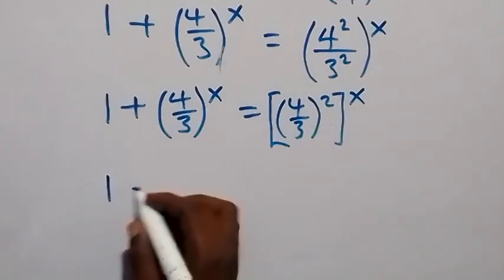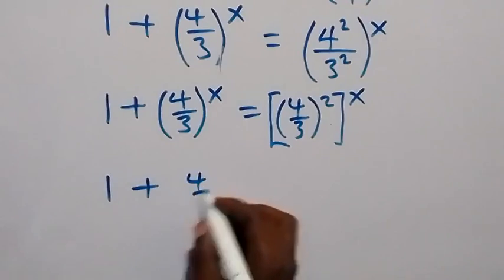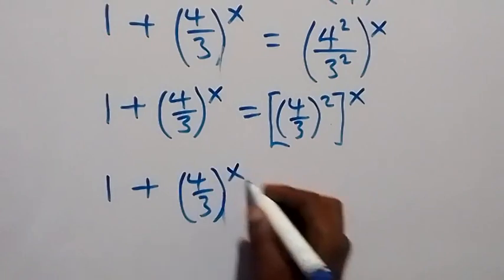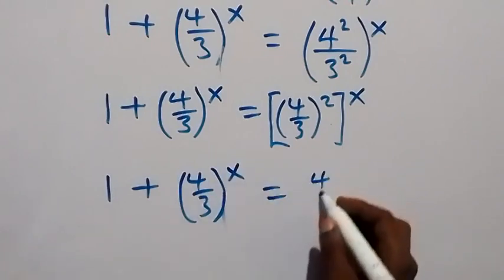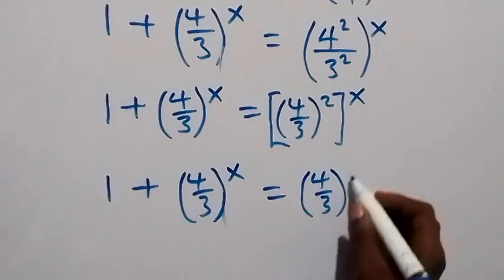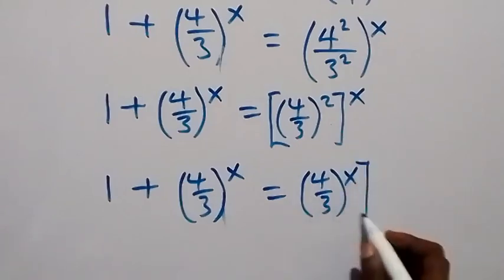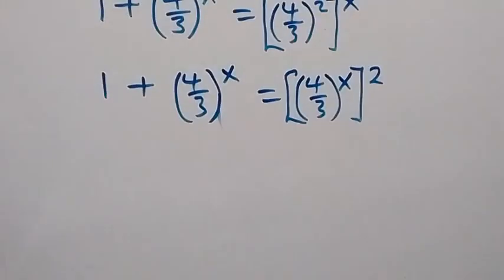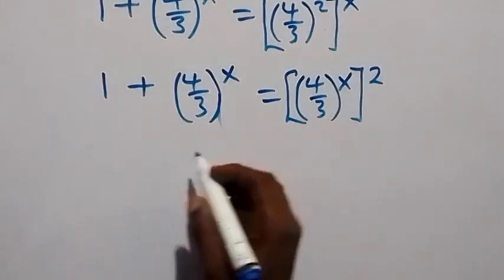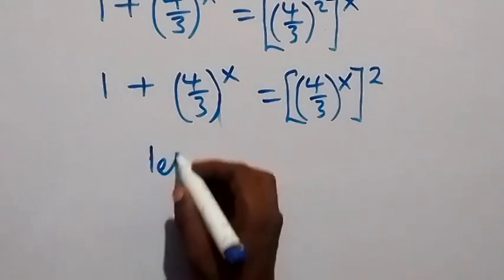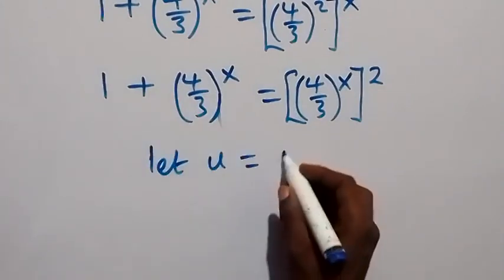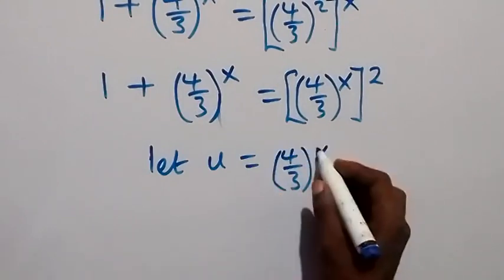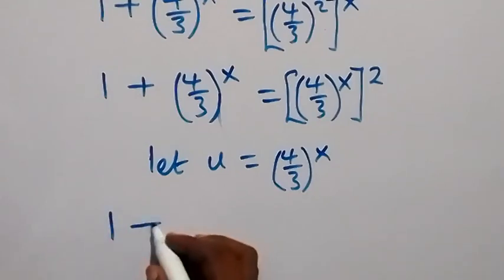By the law of indices, the power of 2 can be factored out, giving us 1 plus (4/3)^x equals (4/3)^(2x), which is (4/3)^x all raised to power 2. Now let u equal (4/3) raised to power x.